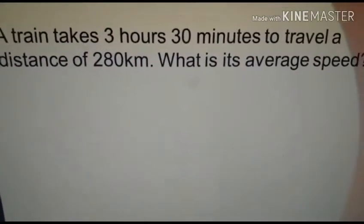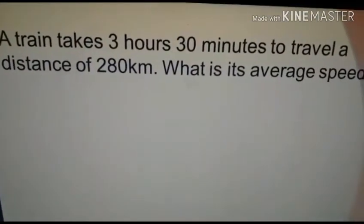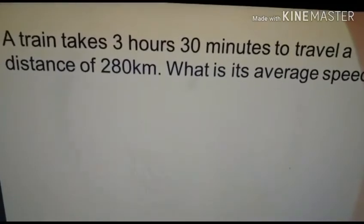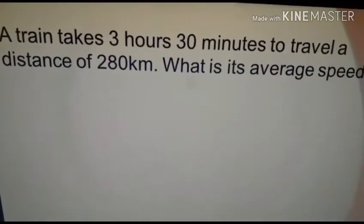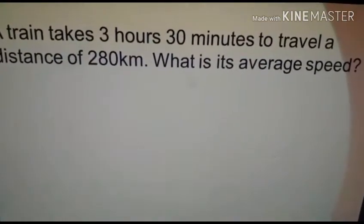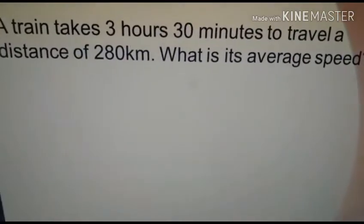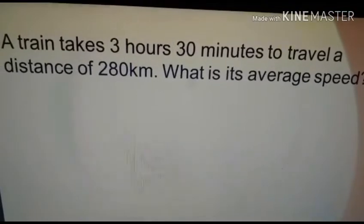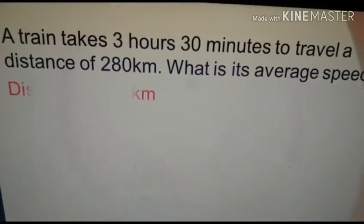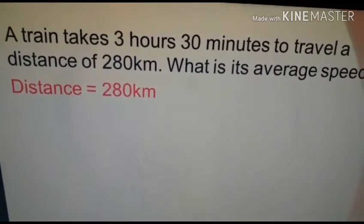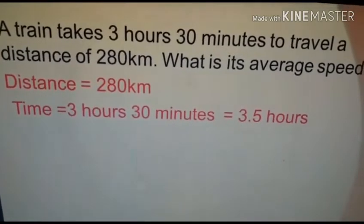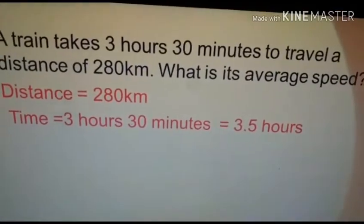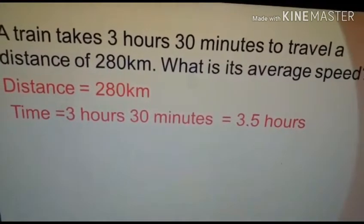Now, look at the question. A train takes 3 hours and 30 minutes to travel a distance of 280 km. What is its average speed? We know the formula to calculate average speed. It is distance by time. Here, the distance is 280 km and the time is 3 hours and 30 minutes.